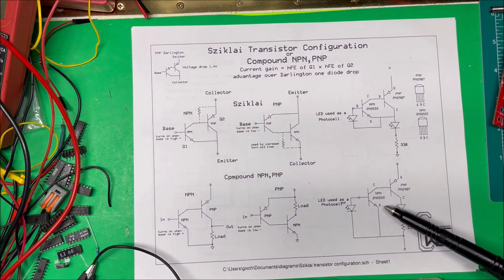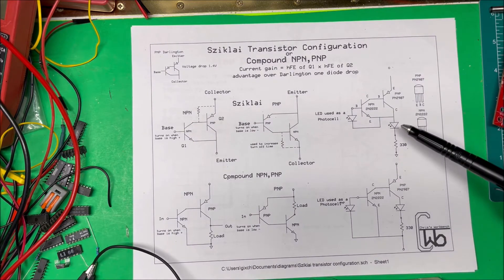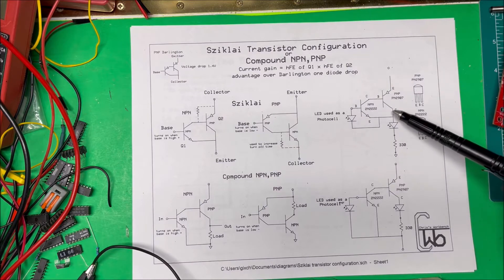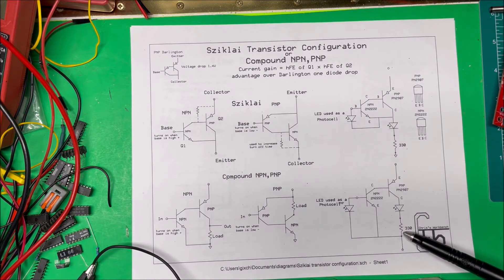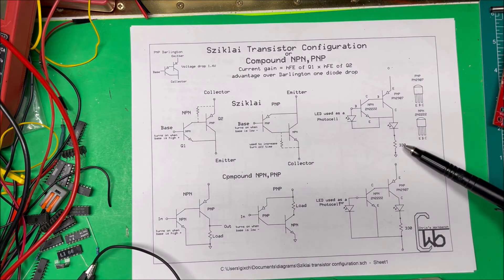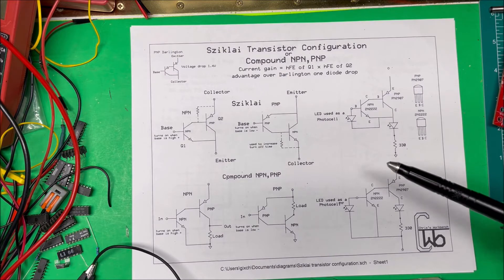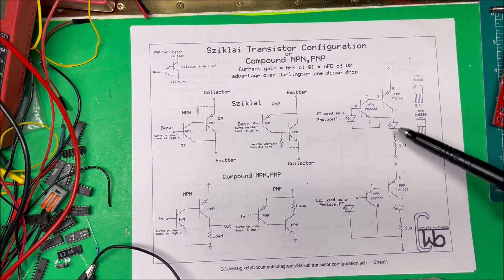The only difference is this has the load down here and the other one's going to have the load right up in that area right there. On mine I didn't use any resistor at all, this happens to be 330 ohms, but I'm only putting three volts on the unit here.